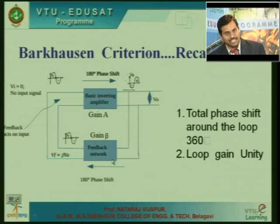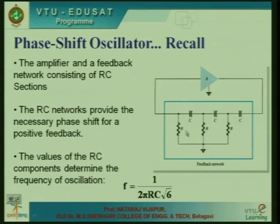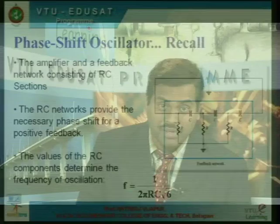Then only the oscillations will be sustained in the circuitry. Recalling the general phase shift oscillator: a general RC phase shift oscillator consists of an amplifier and a feedback network consisting of three RC sections. If the amplifier introduces 180 degrees, each RC section introduces 60 degrees, and together the feedback network generates a 180 degree phase shift, giving 360 degrees total.